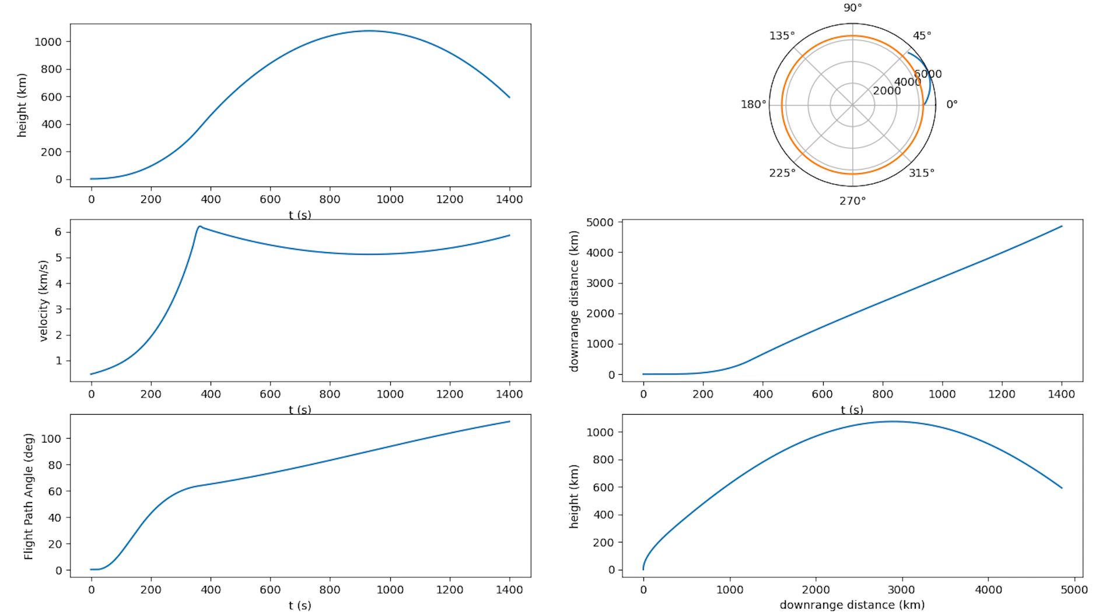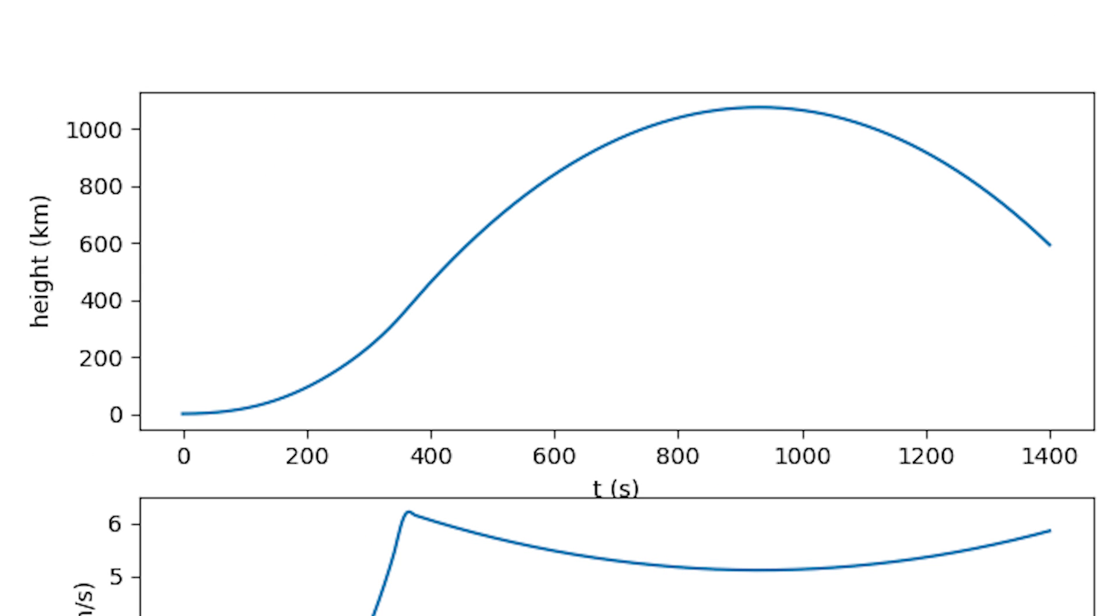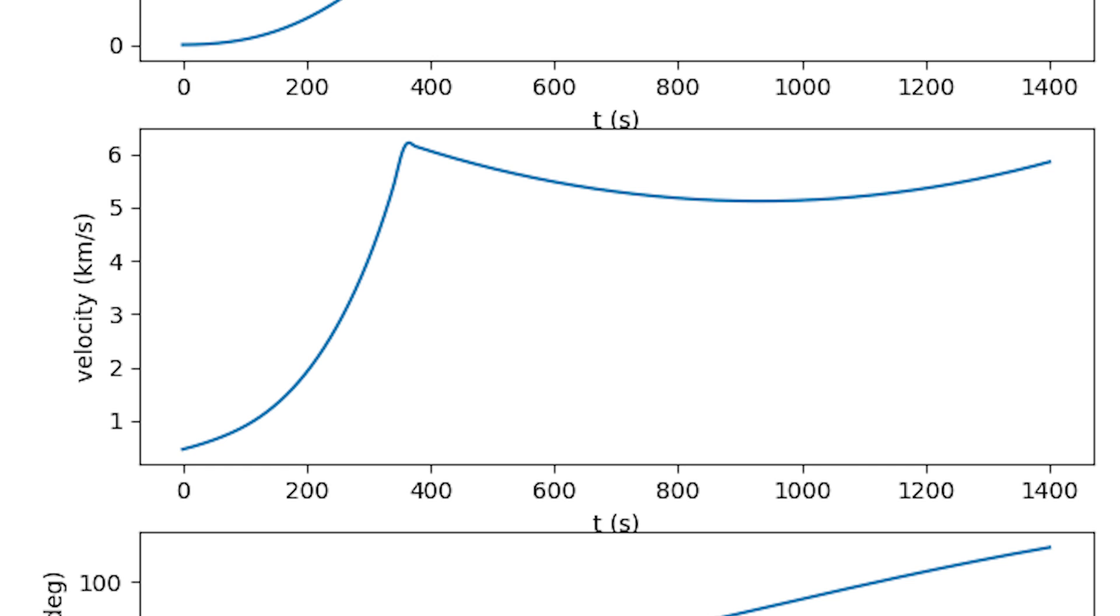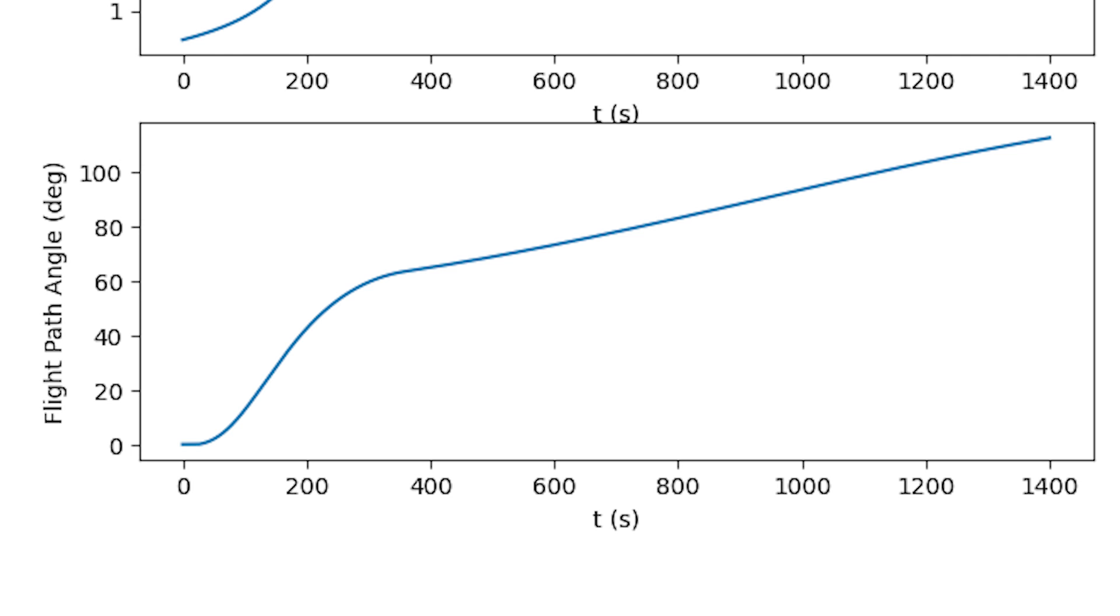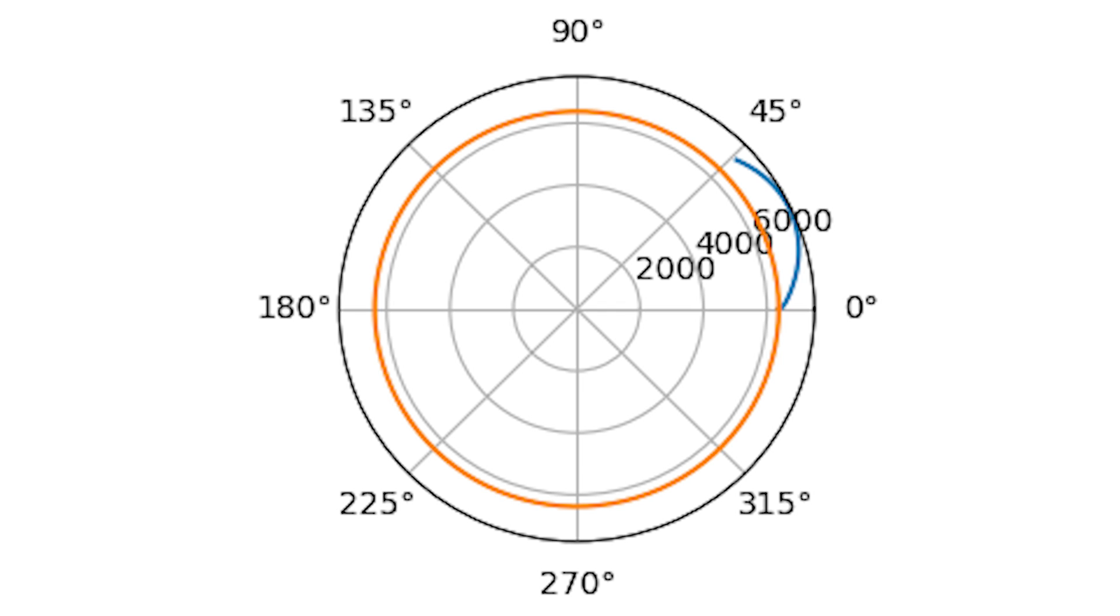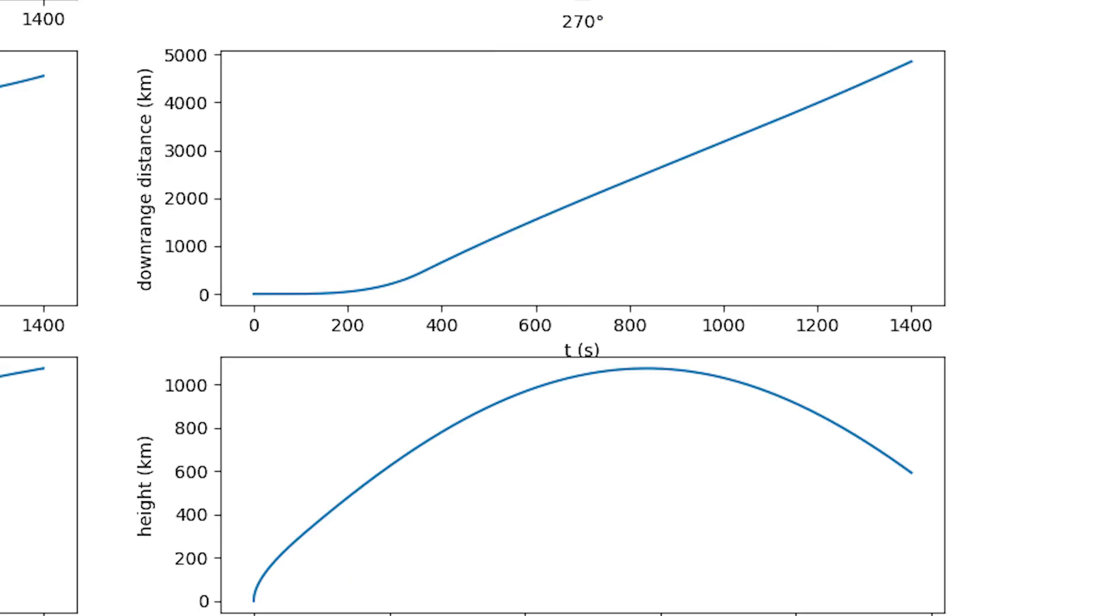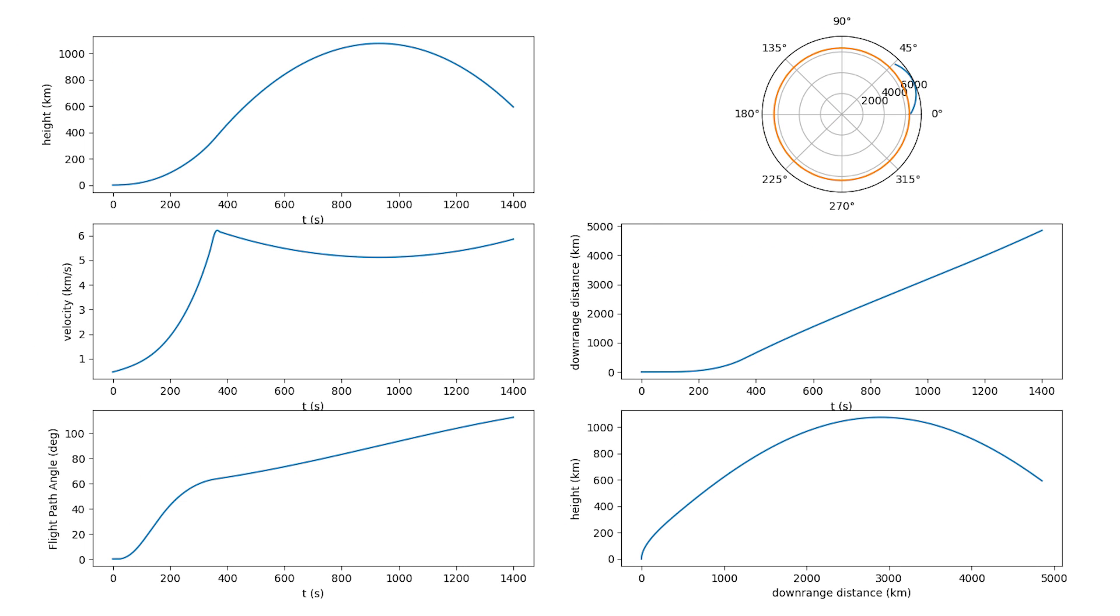The plot in the top left shows the rocket's height versus time, and the plot immediately below it shows velocity versus time. You can tell when the rocket stops burning when the velocity is no longer sharply increasing. Below the velocity is the flight path angle, or the angle of the rocket. Top right is a polar plot that shows the trajectory on the earth, and the two plots below that show downrange distance versus time and height respectively. Now, this is all well and good, but the rocket is still on a collision course with earth.